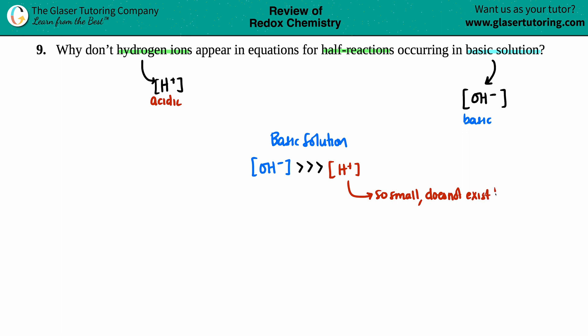Because any time that you would have H plus in a basic solution it will so quickly react with the hydroxide. And what will get produced? What is H plus plus OH minus? Yeah, it's H2O.